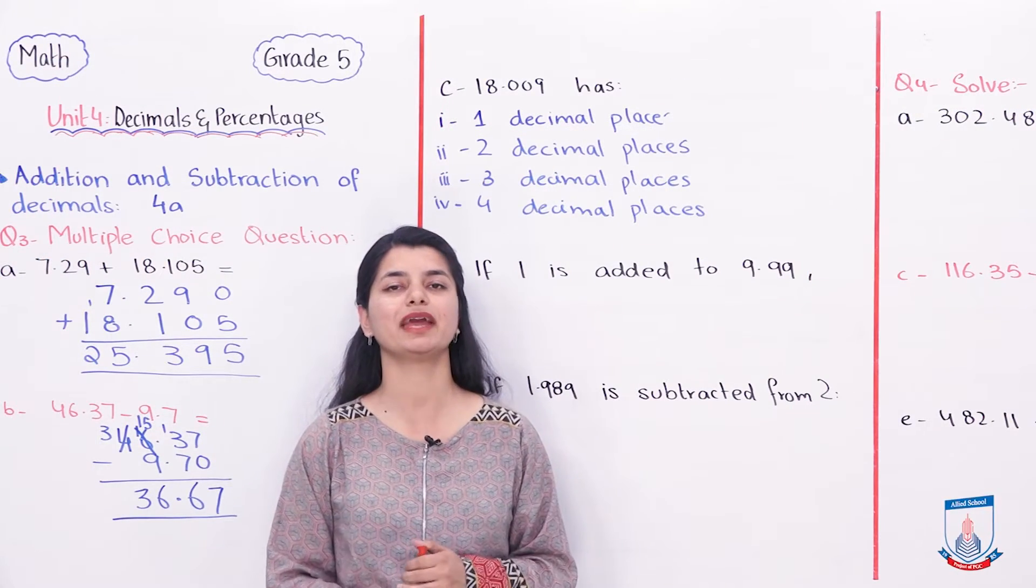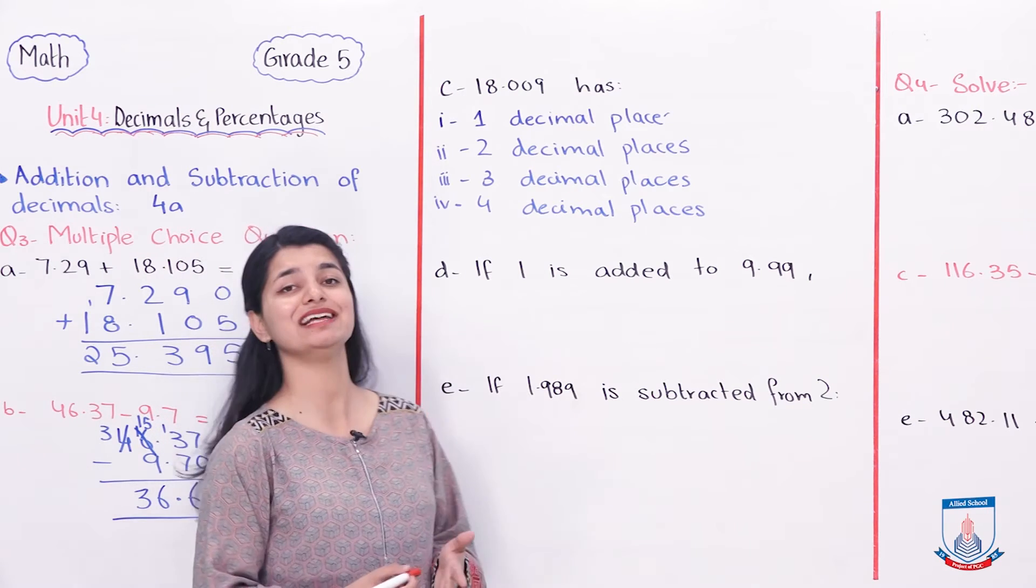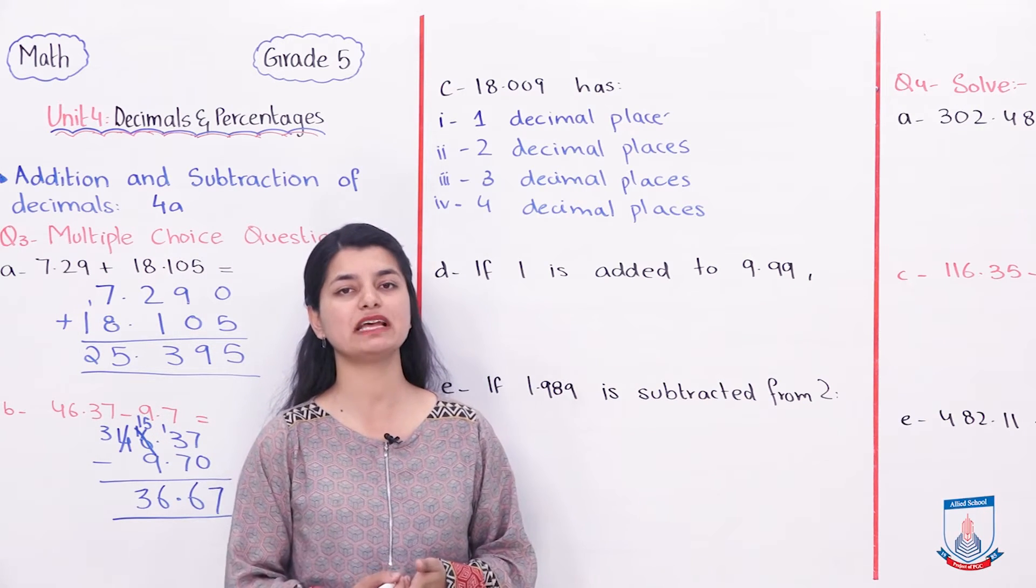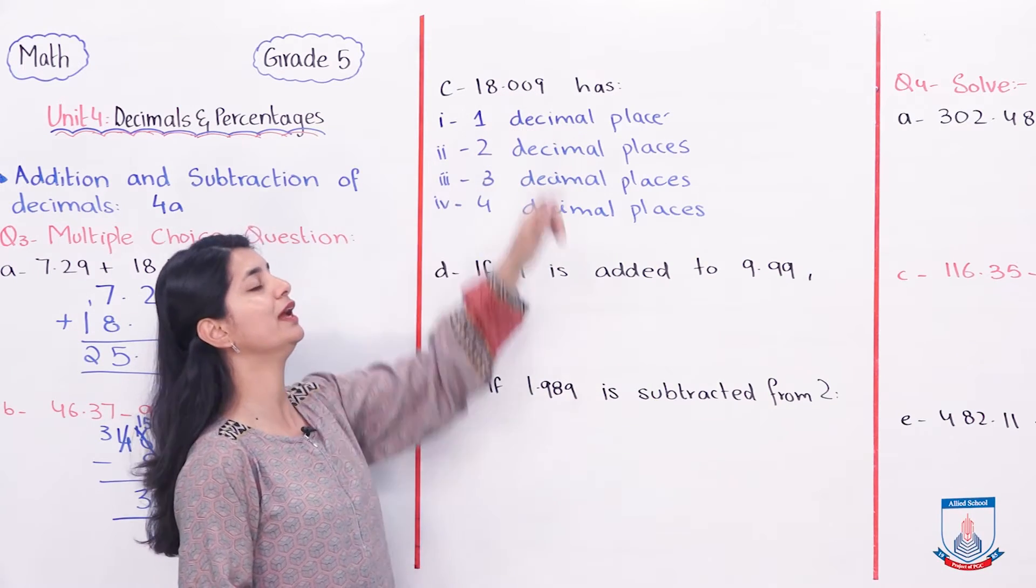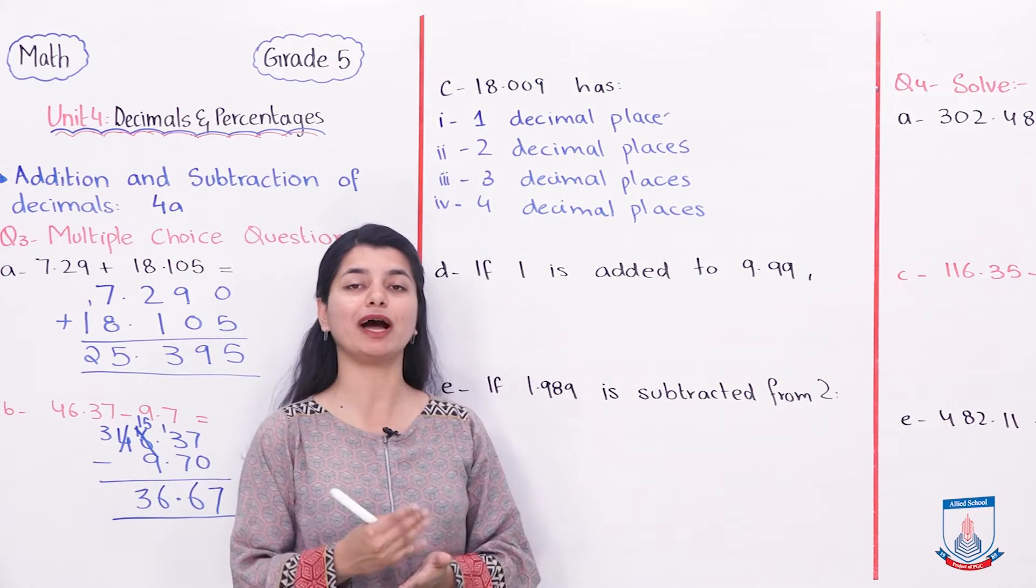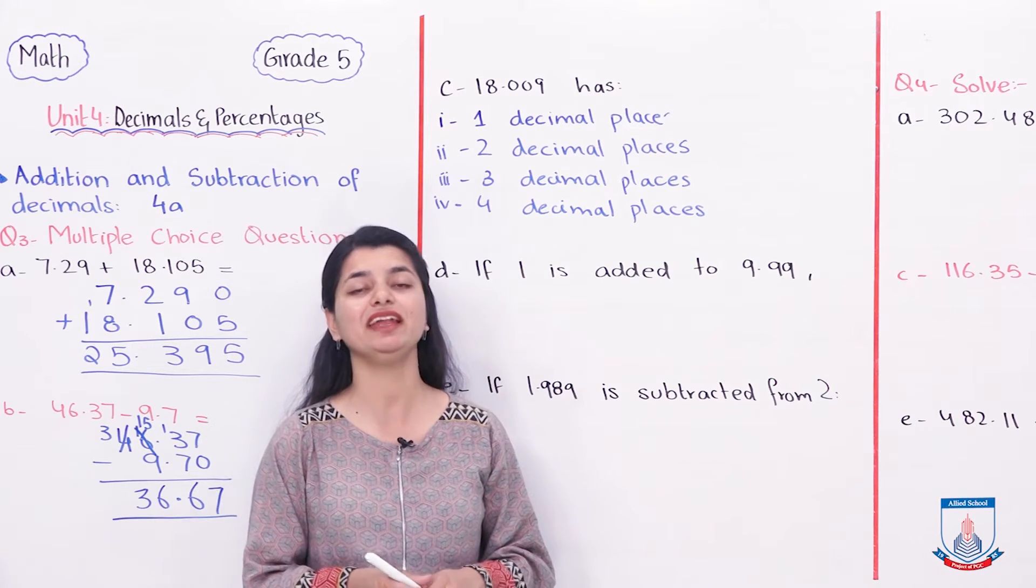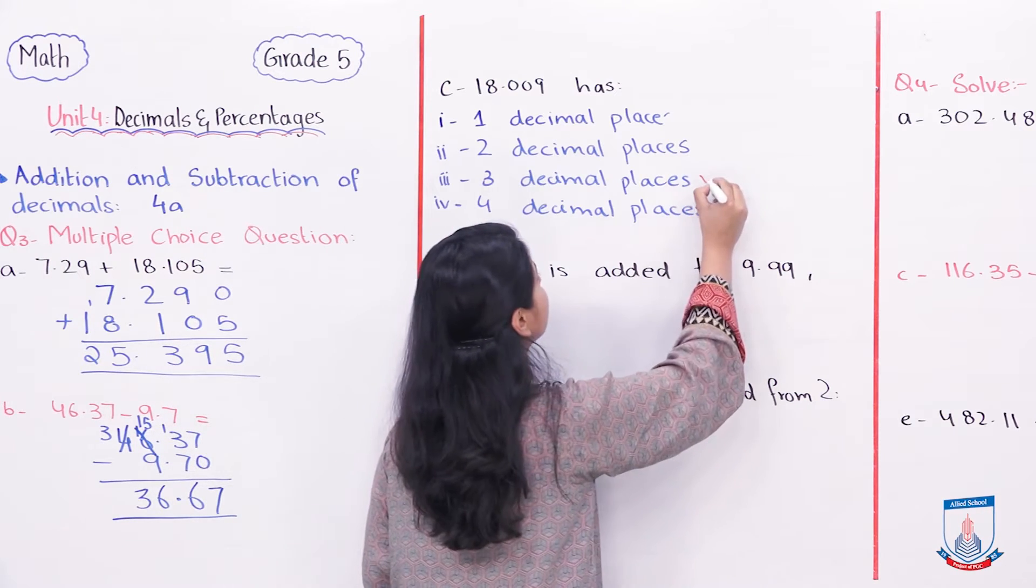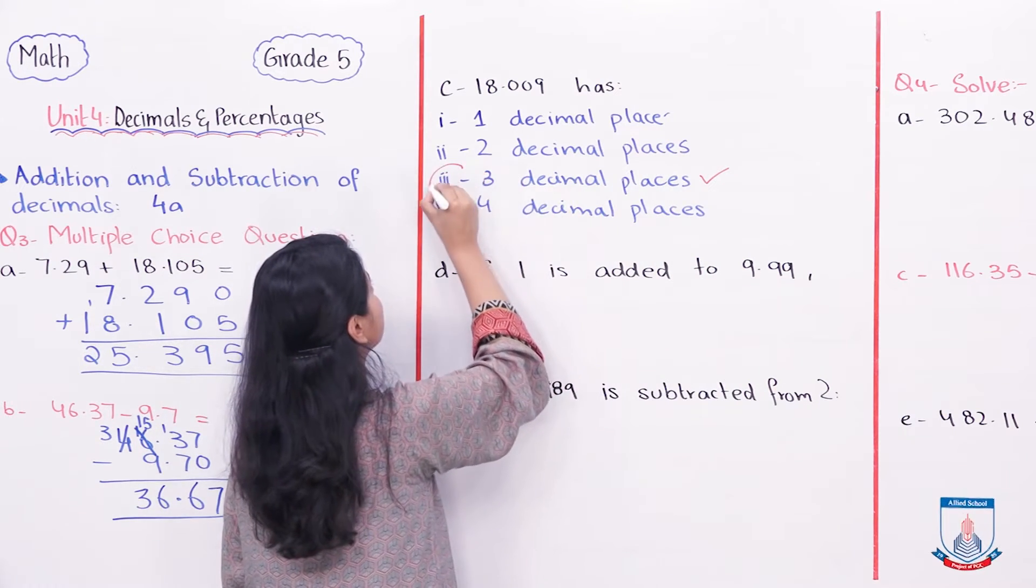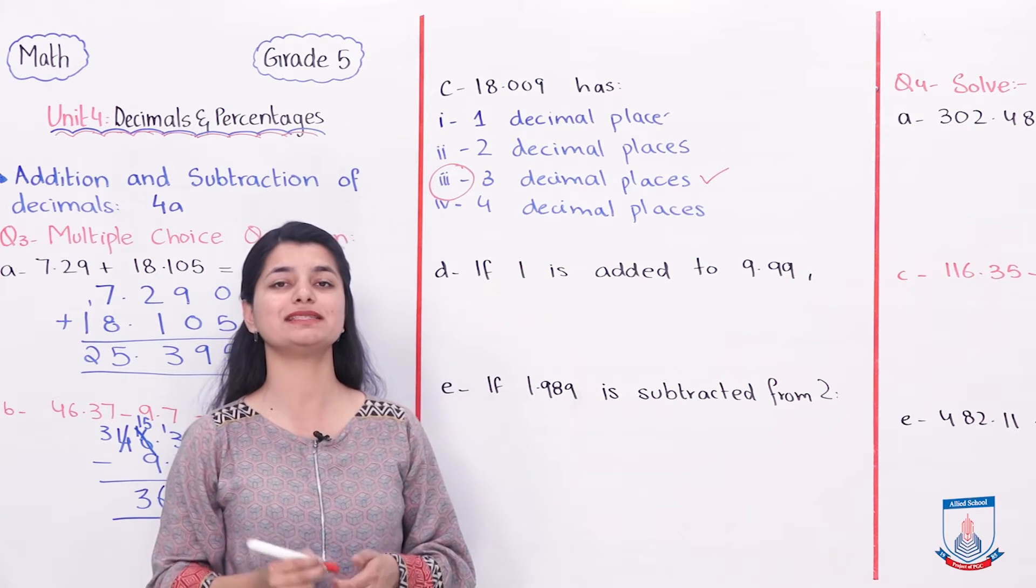The third part is in your MCQs: 18.009 has how many decimal places? Decimal places, count them: 1, 2, 3. Decimal places basically means how many digits are after decimal. 3 are coming. It means that there are 3 decimal places. And here is the option number 3, which is 3 decimal places. You will select that there are 3 decimal places in 18.009.